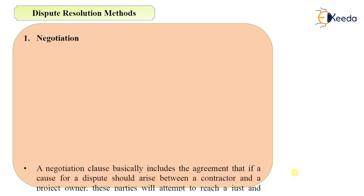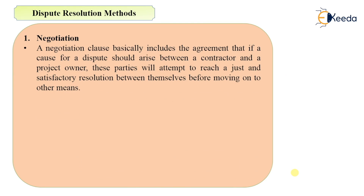The first method is negotiation. A negotiation clause basically includes the agreement that if a cause for a dispute should arise between a contractor and owner, these parties will attempt to reach a just and satisfactory resolution between themselves before moving on to other means. They will have negotiation between the owner and the contractor to resolve the issues by themselves.